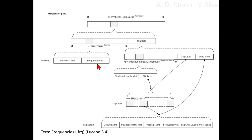The doc delta encodes both the document number and the frequency. In particular, doc delta divided by 2 is the difference between this document number and the previous document number, or 0 when this is the first document in a term. When doc delta is odd, the frequency is 1. When the doc delta is even, the frequency is read as another vint.